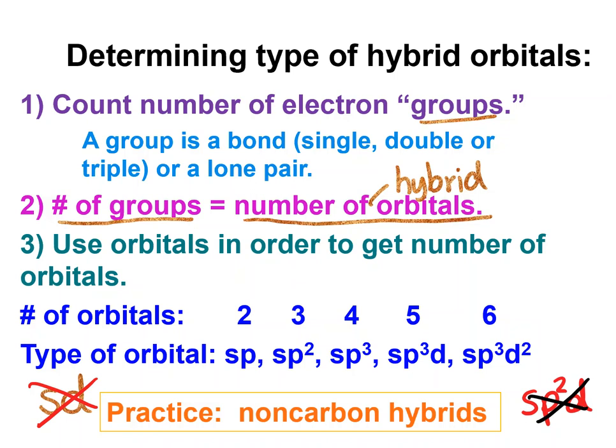So if I have, remember this also works as the electron group. So if I have four electron groups, my hybrid is SP3. If I have two electron groups, my hybrid is SP.